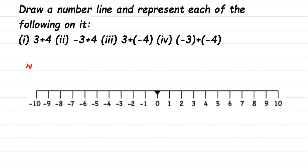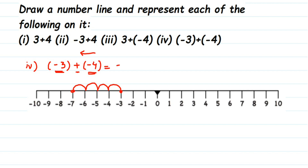The last question is -3 + (-4). Both are negative numbers. We locate minus three on the number line, then move four units to the left — one, two, three, four — stopping at minus seven. So minus three plus minus four is minus seven. I hope this question is clear. If you have further questions, drop a comment. Thank you so much for watching.